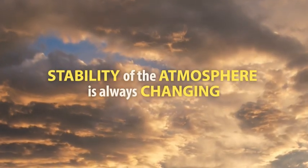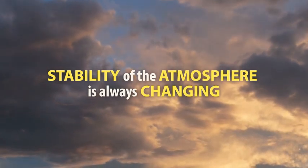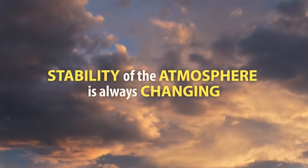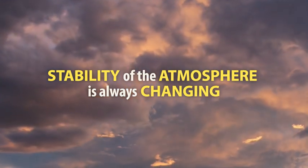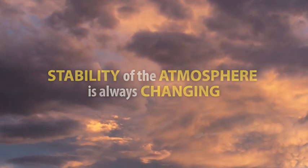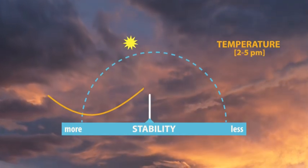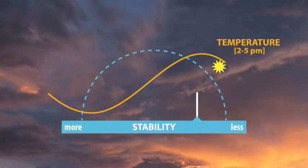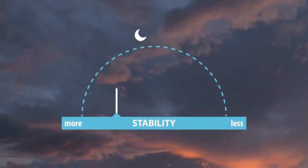The stability of the atmosphere is always changing. Conditions that cause instability, like uneven heating of the earth's surface and fire, are only temporary. And when the heating is removed, the atmosphere moves back towards stability. Typically, stability decreases from morning to afternoon as the sun heats the near surface layer of air. And at night, the stability increases as air near the surface cools.